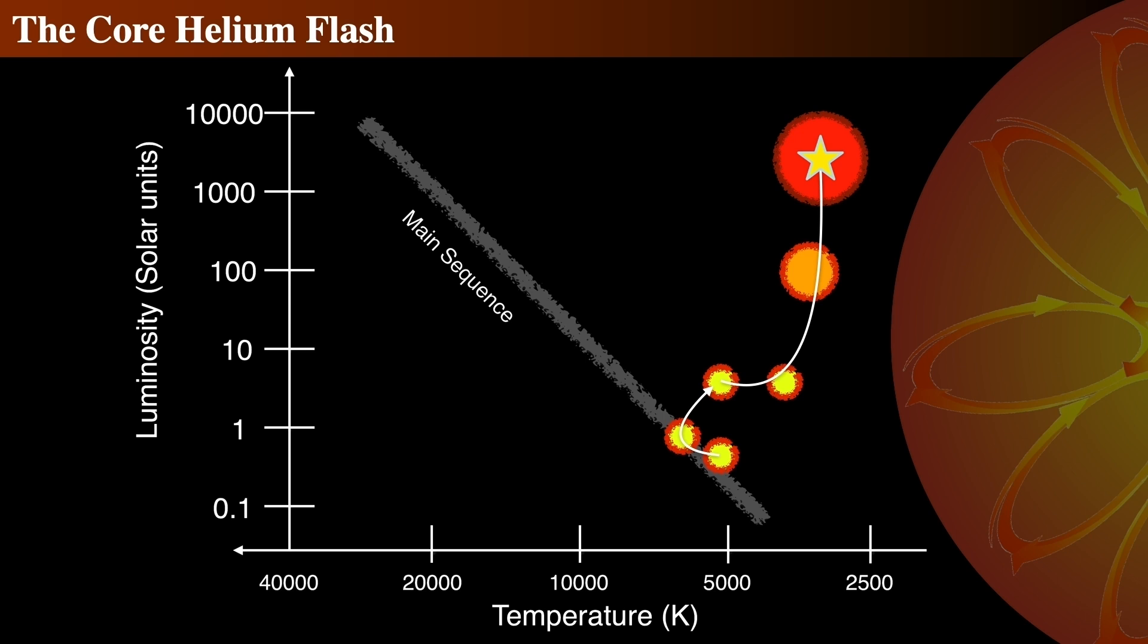Once it does, the core then expands, which decreases the density. A lower density then lowers the temperature, which in turn then slows this crazy reaction rate.